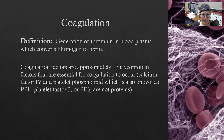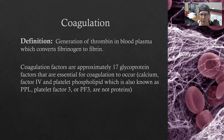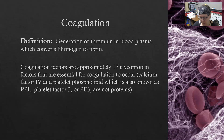The coagulation factors involved in coagulation are approximately 17 glycoproteins that are essential for coagulation to occur. There are a few other essential molecules that are not proteins: calcium (factor 4), and platelet phospholipid, also known as PPL, platelet factor 3, or PF3. Those three are not proteins.